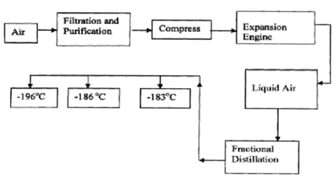Welcome. Here is a sample question on fractional distillation of liquefied air. Study the flowchart and answer the questions that follow. Air is taken through the filtration and purification chamber, then through the compressor, then through the expansion engines, which liquefy the air to give liquid air. Then the liquid air is taken to the fractional distillation chamber, whereby you get three components: one at negative 196 degrees Celsius, another at negative 186 degrees Celsius, and the last at negative 183 degrees Celsius.